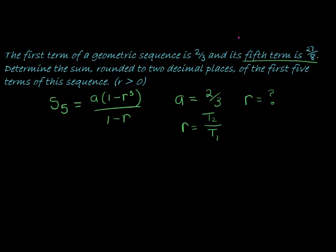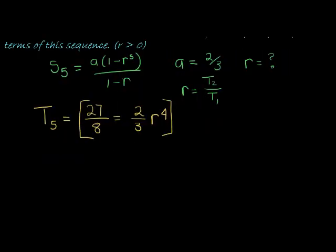So let's see if that can help us. The fifth term, T5, is equal to 27/8. Now how did we get this 27/8? Well, we said it was the first term of 2/3 times the constant ratio for four times. This should be n minus 1. So n is 5, that makes it 5 minus 1 is 4. So with this in mind, we can see we have an equation.